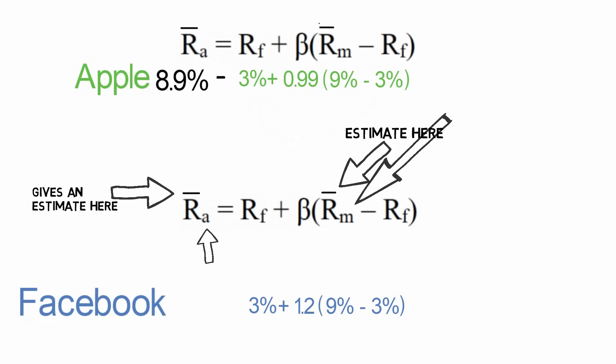So when we calculate these, we end up with 8.9% for Apple and 10.2% for Facebook. Now don't forget, the only difference between Apple's formula and Facebook's formula is their individual beta.